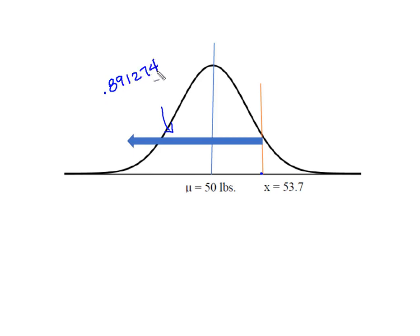Remember the characteristic of the normal curve is that the total area of the curve is equal to 1. We only want this area up here. So if we know from here down to the left is 0.891274, in order to find this area up here, we're simply going to take 1 and subtract the area that we don't want to give us the area we do want, which is going to be 0.108726.